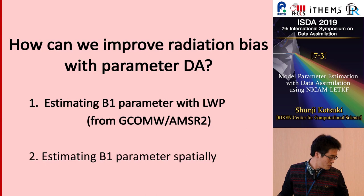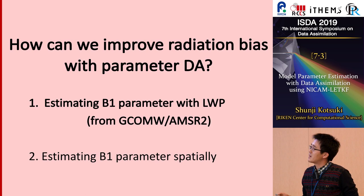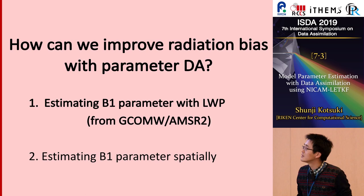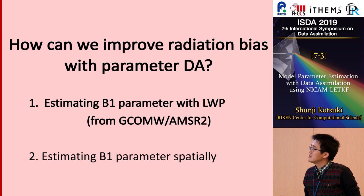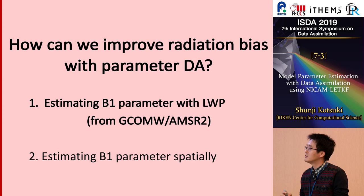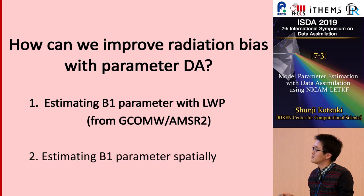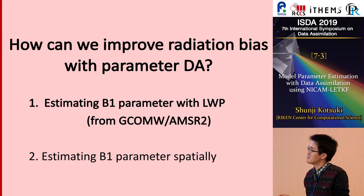The default model has a certain radiation budget bias, but due to parameter estimation in this case, the OLR was degraded. So in this study, we aim to extend the parameter estimation further. The question is: how can we improve the radiation bias with parameter data estimation? We consider two strategies. One is to estimate the parameter against a different observation — specifically, liquid water path — because B1 controls the conversion rate from cloud to rain. The second strategy is to estimate B1 as a spatially varying parameter.